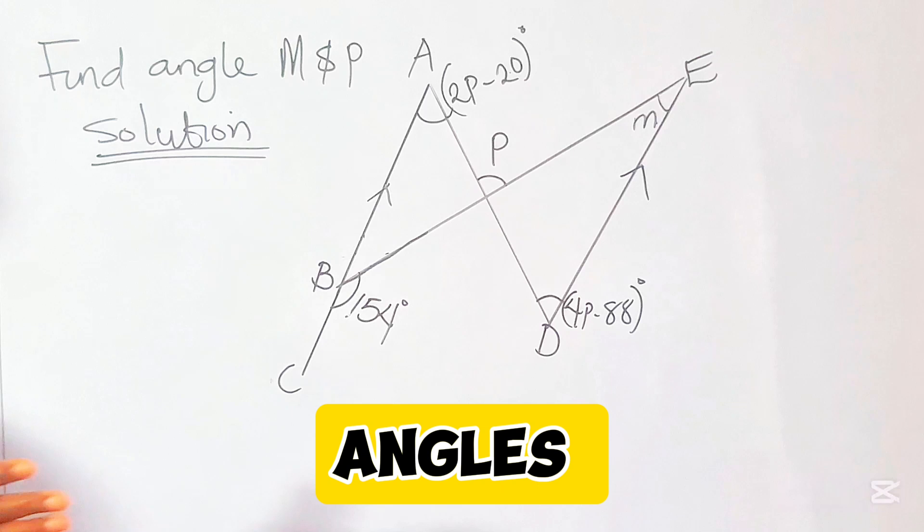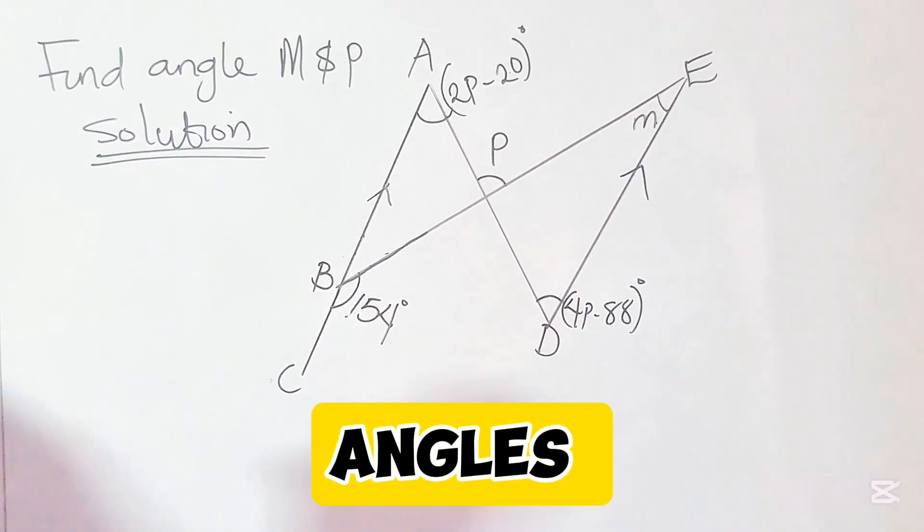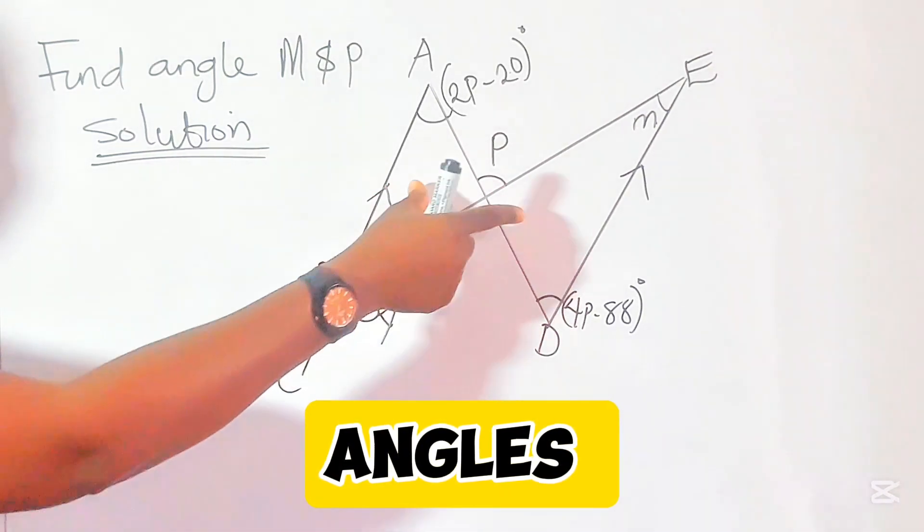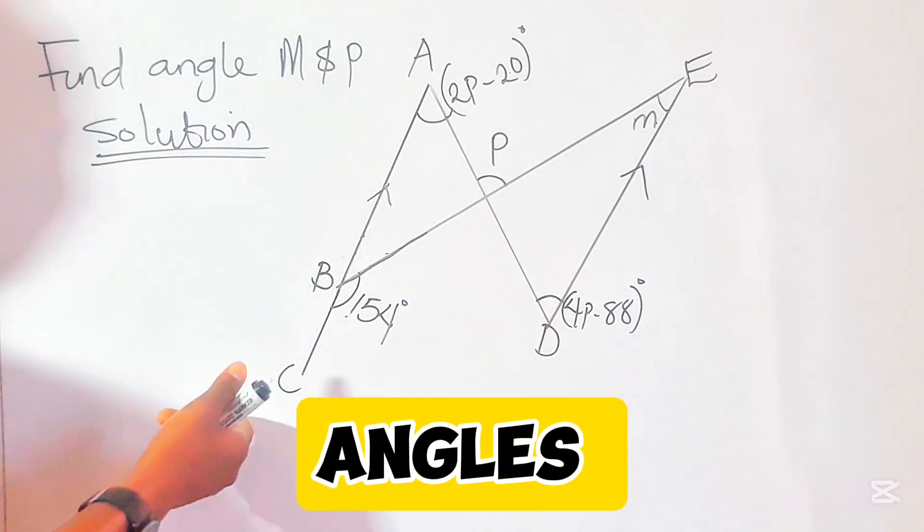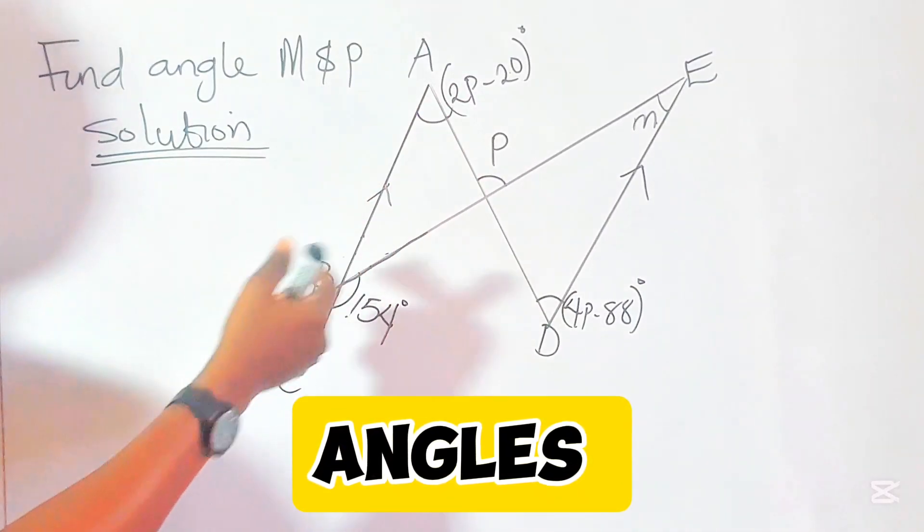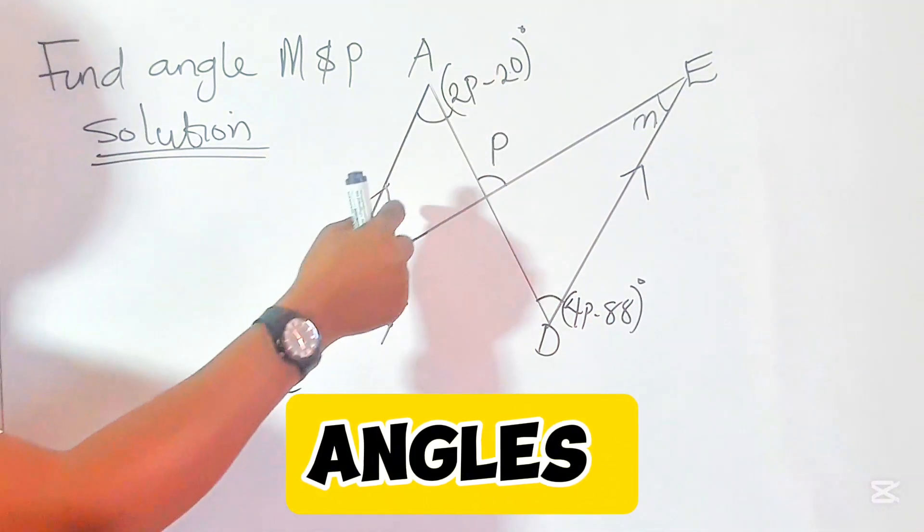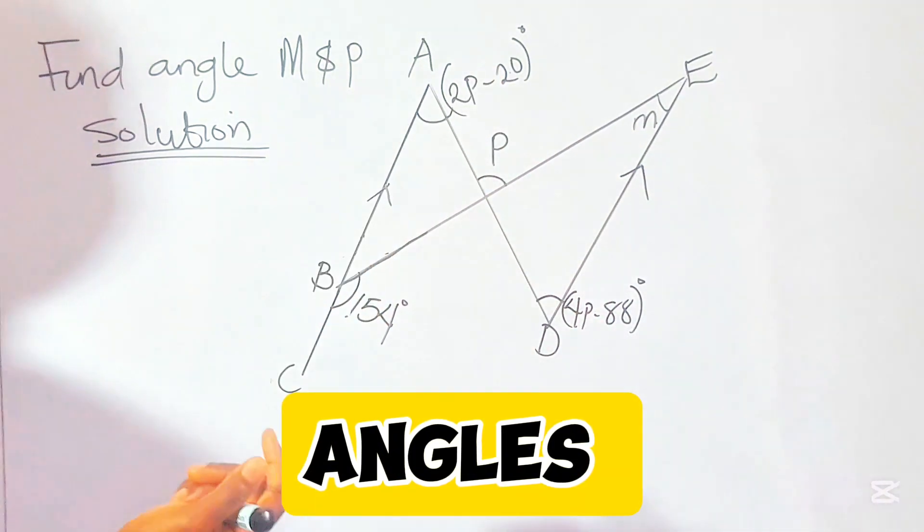To solve this with ease, we'll be applying our knowledge of angle relationships between angles formed and parallel lines. Now from this question, we know that AC is parallel to line DE, and these two lines are transversal.